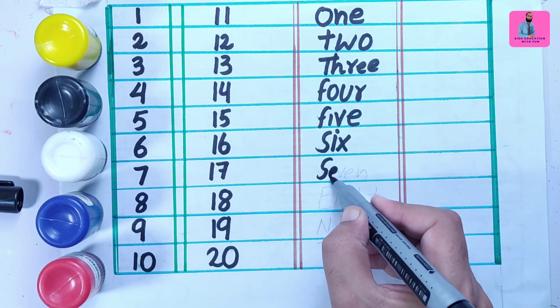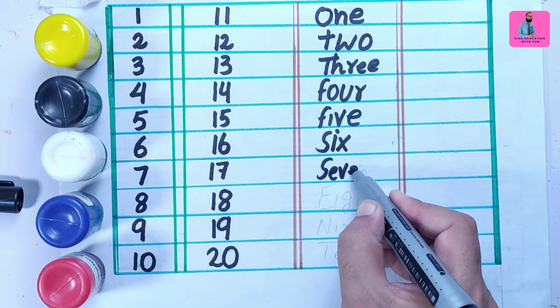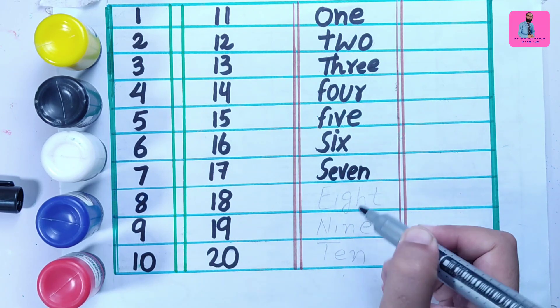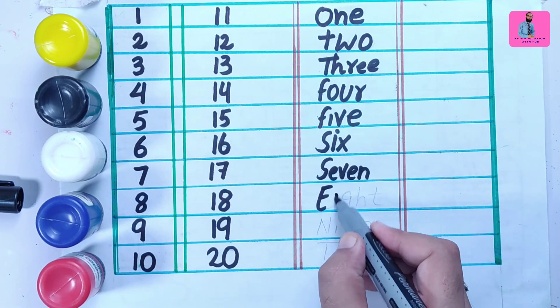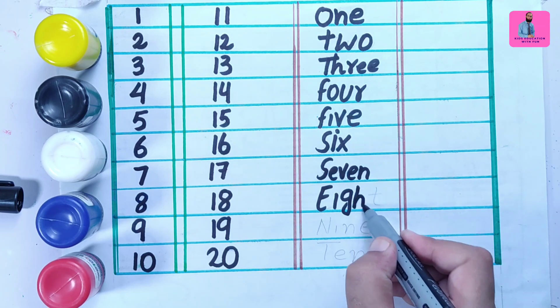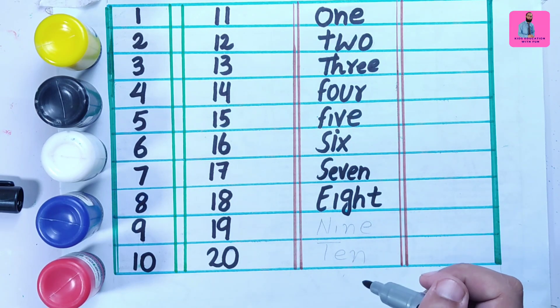S, E, V, E, N. Seven. E, I, G, H, T. Eight.